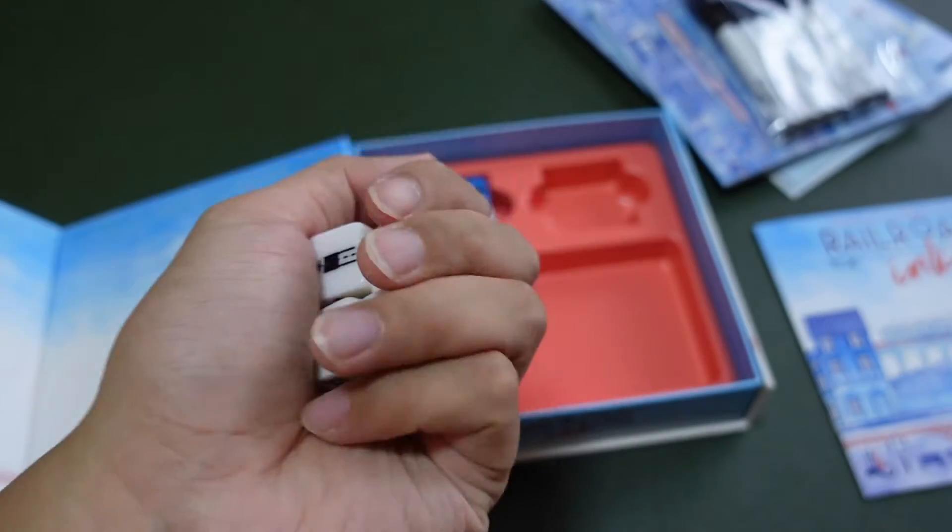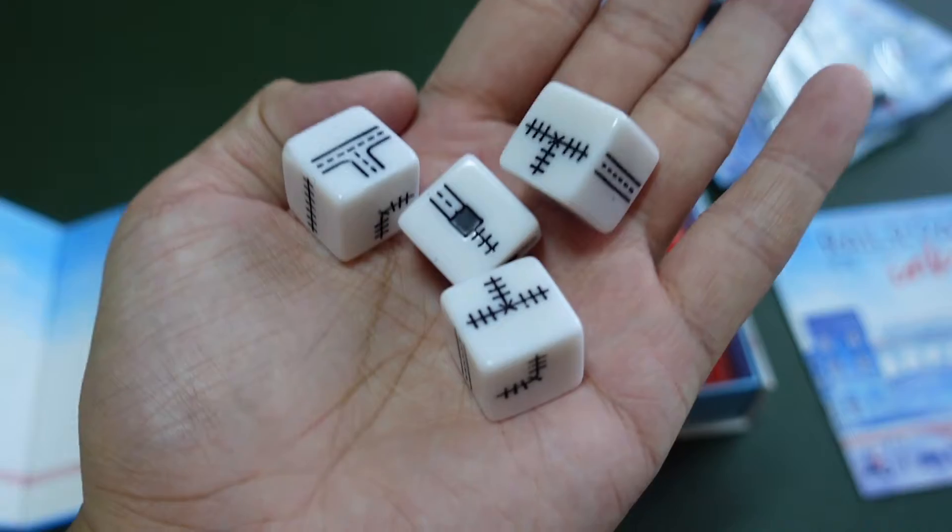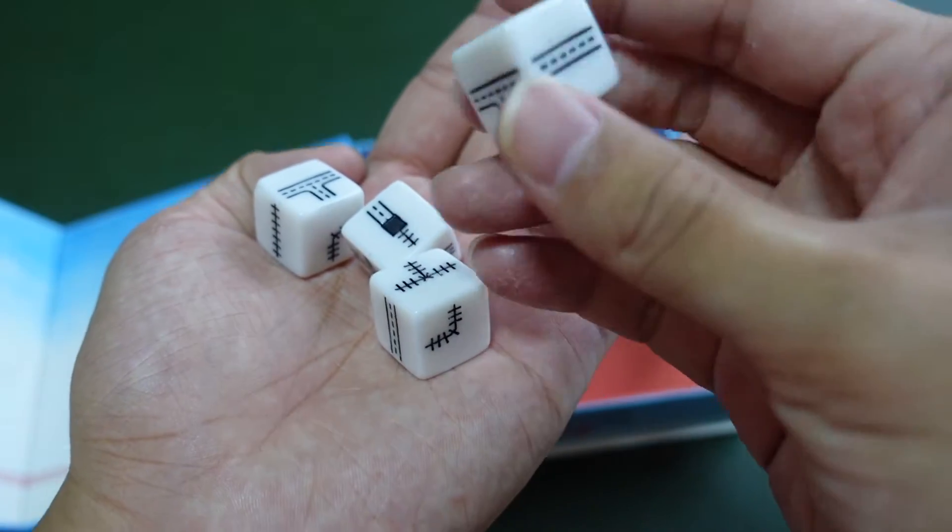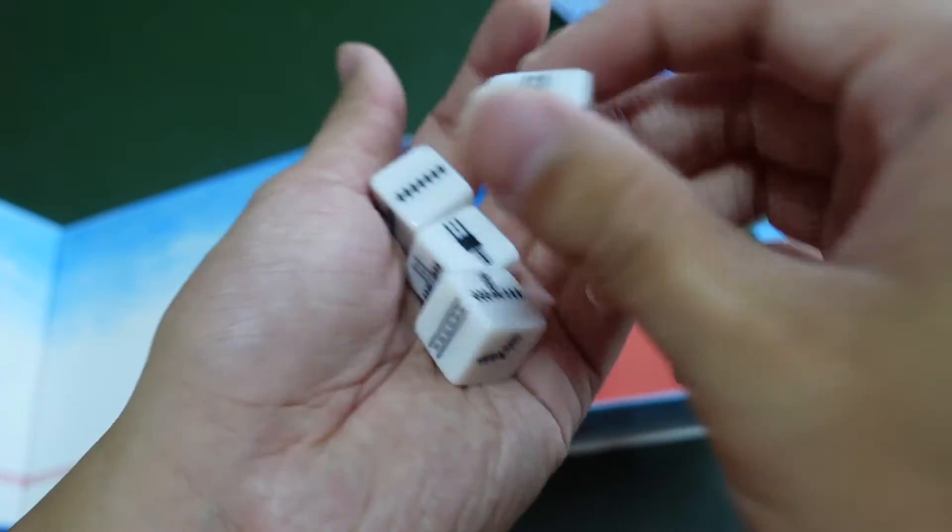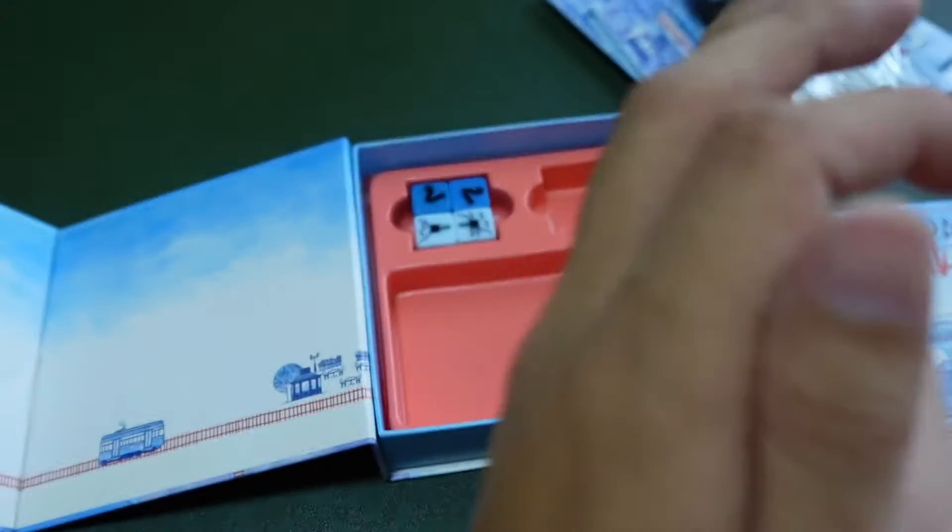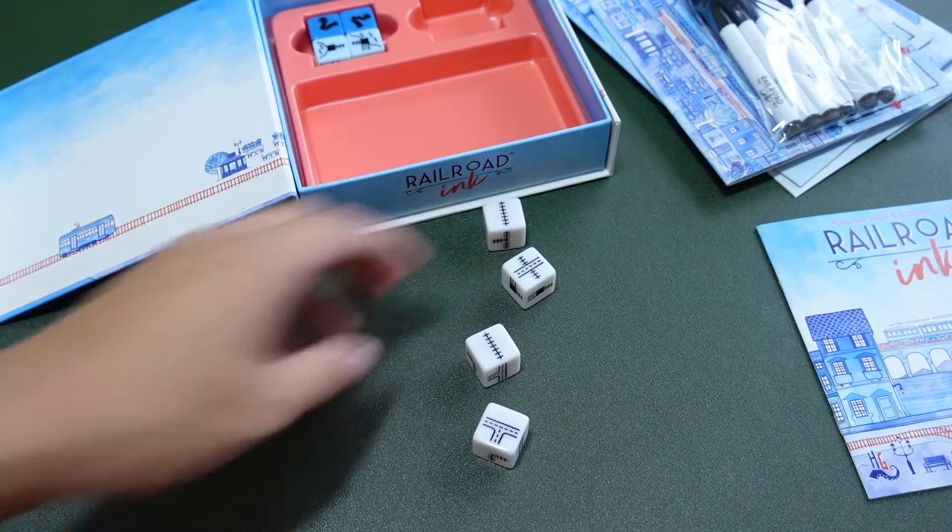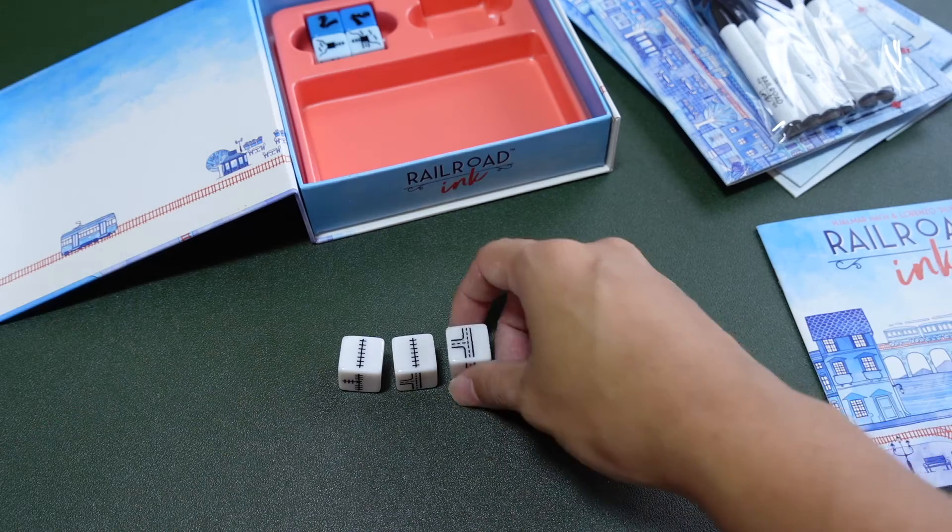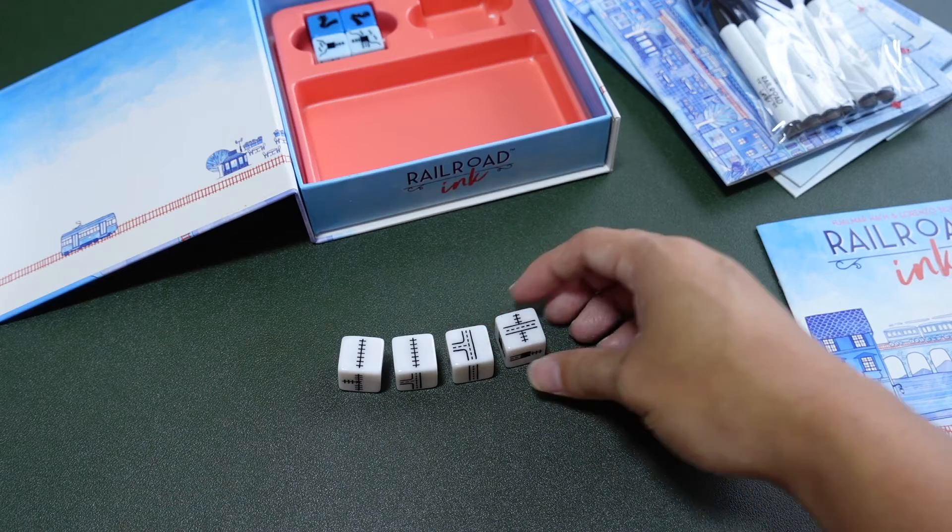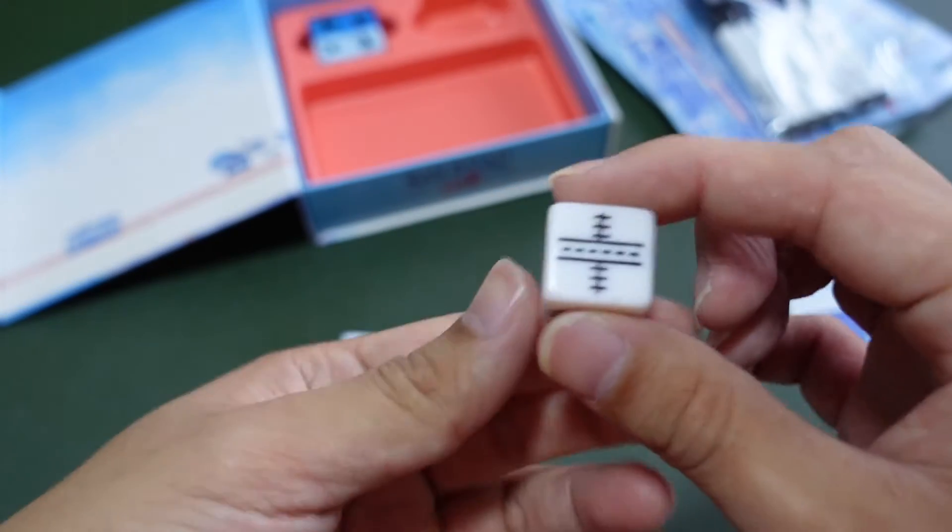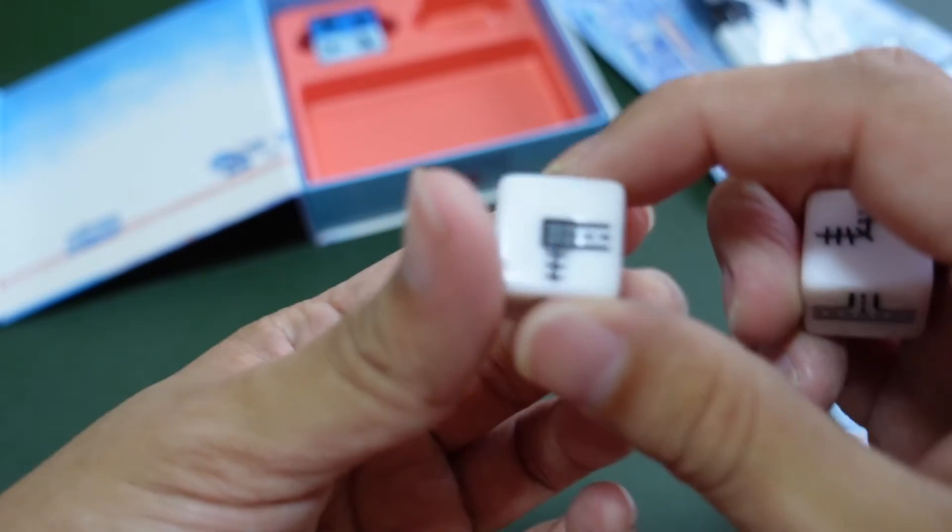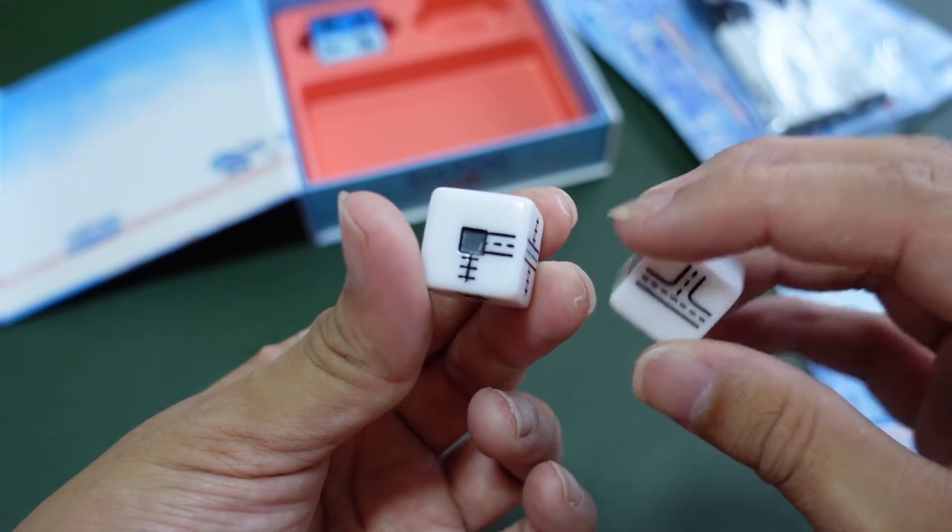These are pretty chunky dice. They're slightly bigger than normal dice, definitely bigger than Dice Throne. They sound pretty nice when you roll them. I like dice games quite a bit because of the feel of rolling them. You can see the different faces on the dice. They don't all have the same faces.